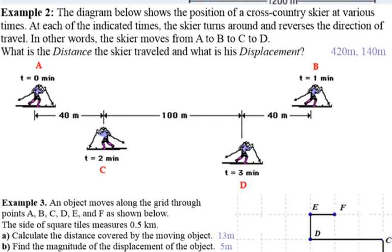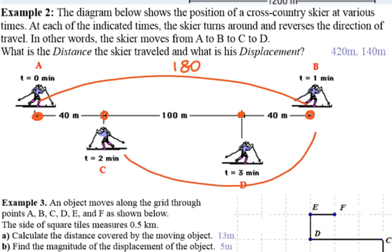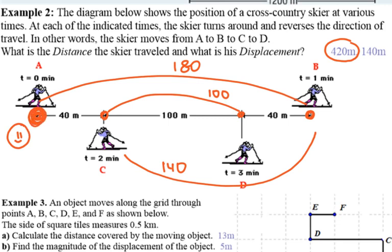Another example: a skier goes from A to B (180 m), B to C (140 m), and C to D (100 m), for a total distance of 420 meters. But if someone only saw him go from A to D, they'd say his displacement is 140 meters — they didn't see the full path.